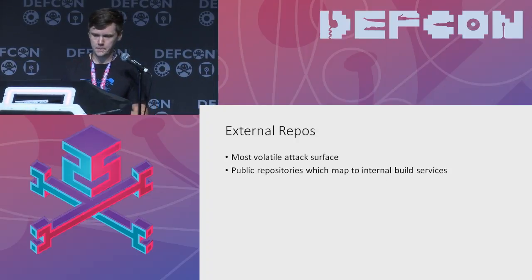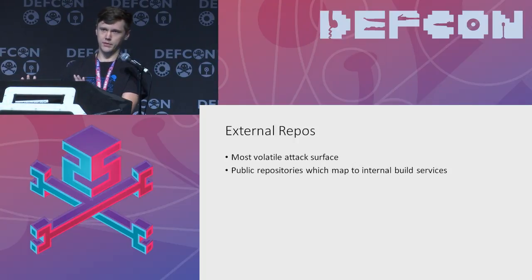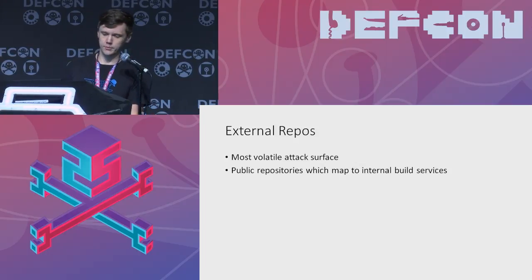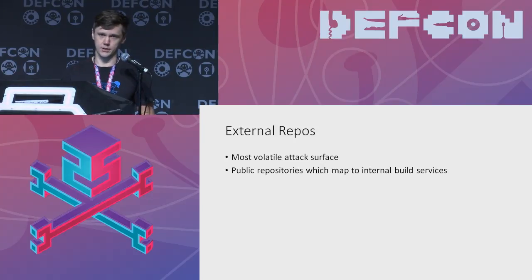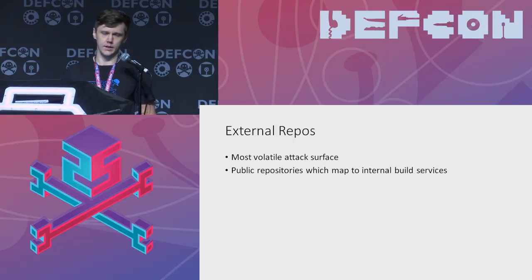The most volatile attack surface is a company with a public-facing repository open to open source contribution. If they're hosting internal build services connected to a public repository, they're basically allowing anyone to run code on those internal build services — because anyone can make a pull request. They don't have to accept the pull request or commit it to a branch. You just cut a branch, make a PR, and run code on their servers.